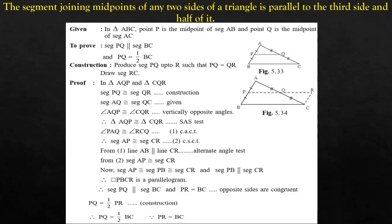This particular theorem is known as the Theorem of Midpoints of Two Sides of a Triangle. The segment joining midpoints of any two sides of a triangle is parallel to the third side and half of it. According to the given information, in triangle ABC, point P is the midpoint of segment AB and point Q is the midpoint of segment AC. We have to prove that PQ is parallel to BC and PQ is half of BC.